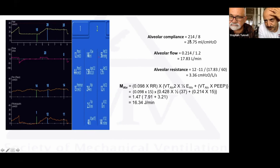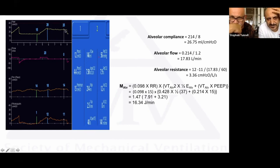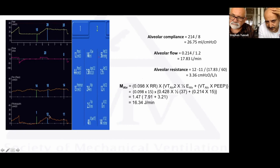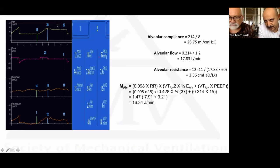Alveolar compliance = 214 / 8 (delta pressure) = 26.75 ml/cmH₂O. Alveolar flow = 0.214 L / 1.2 s inspiratory time = ~0.178 L/s (≈17 — close to the set inspiratory flow of 20). Alveolar resistance = (12 − 11) / 0.178 = ~3.36 cmH₂O/L/s, compared to regular resistance from (peak − plateau)/flow of about 9 cmH₂O/L/s.